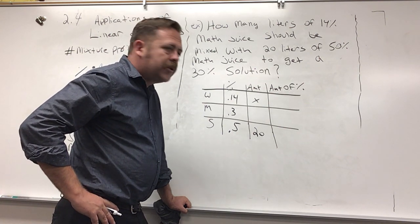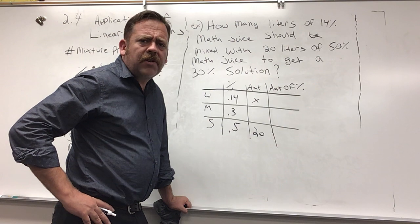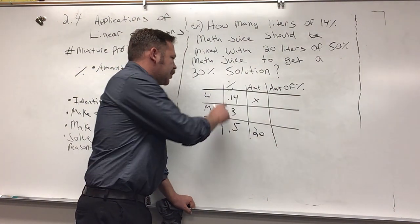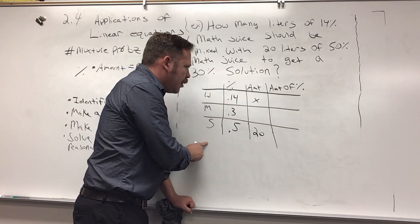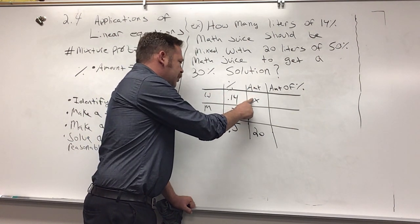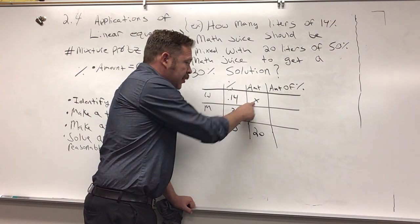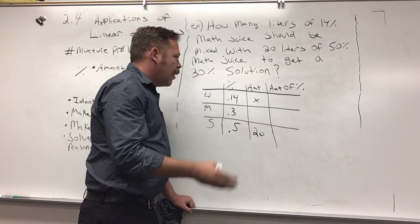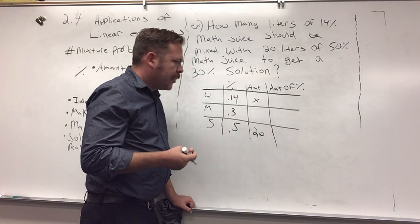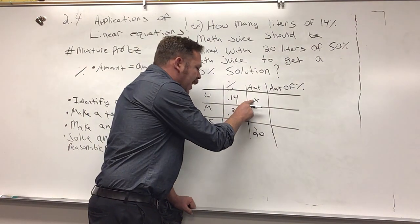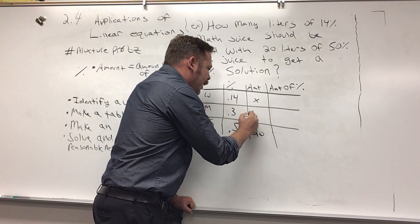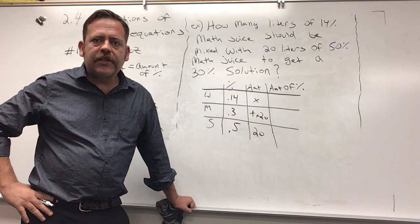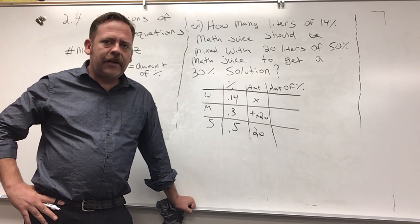Here's the one other maybe little tricky thing, but the mixture problem is a little more straightforward. When you're adding something weak to something strong, we're adding this amount of the weak or 14% math juice to this amount, the 20 liters of the 50% math juice. What's the amount of the middle strength that I'm going to have? If I add x to 20 it would be x plus 20, right? I hope that makes sense to you.